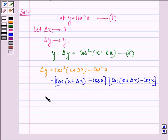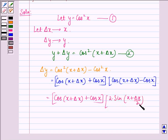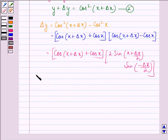We have cos of x plus delta x plus cos x, multiplied by cos of x plus delta x minus cos x. This can be written as cos of x plus delta x plus cos x, into 2 sin of x plus delta x by 2, times sin of minus delta x by 2.